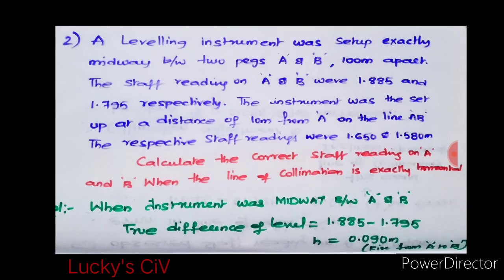Coming to the second problem, a leveling instrument was set up exactly midway between the two pegs A and B, which are 100 meters apart. The staff readings on A and B were 1.885 meters and 1.195 meters respectively.